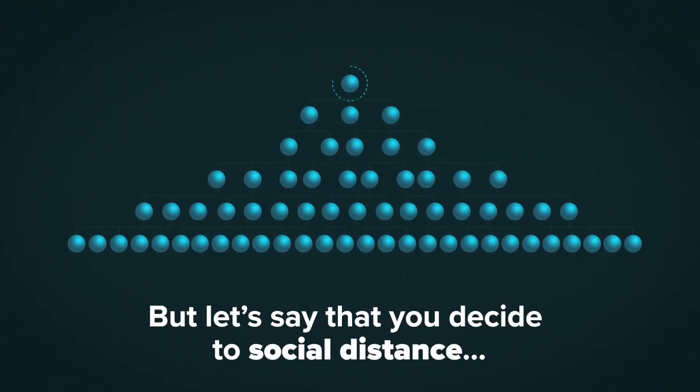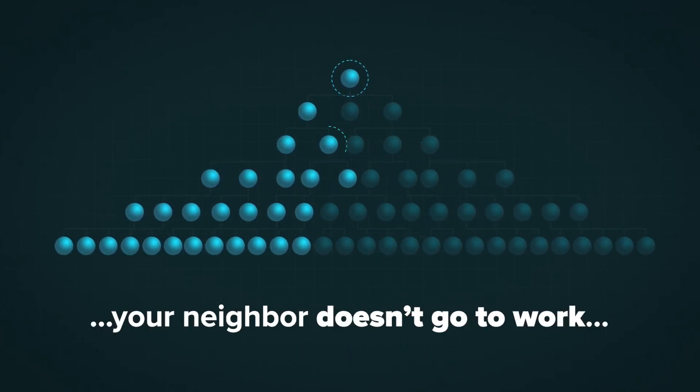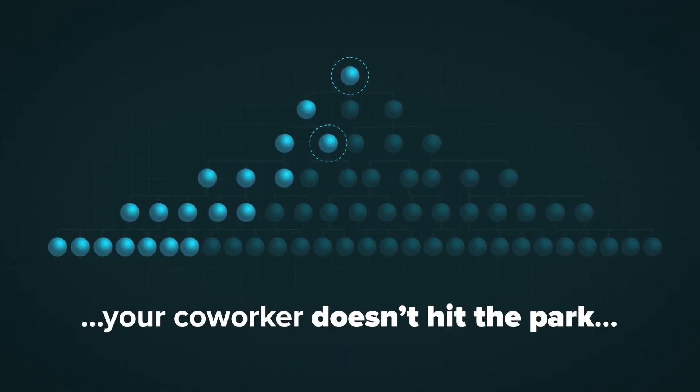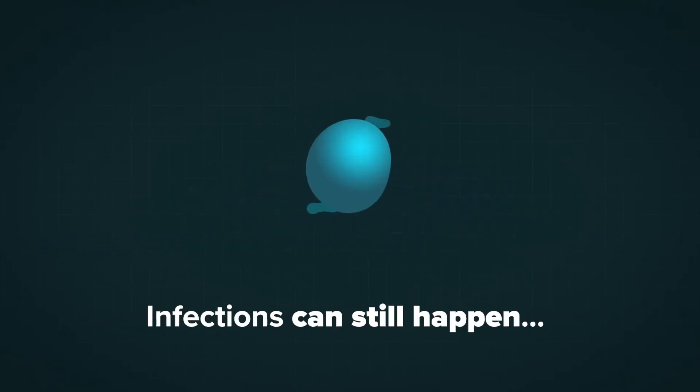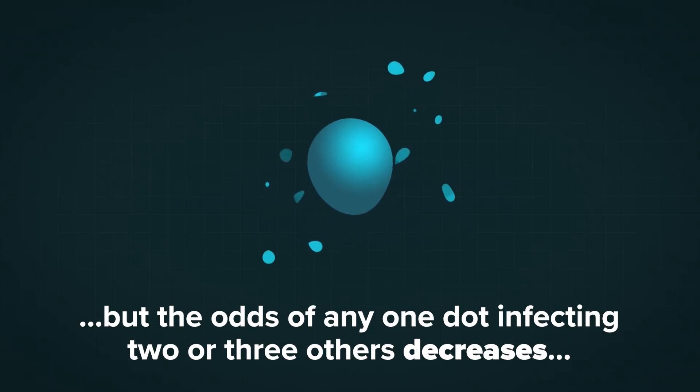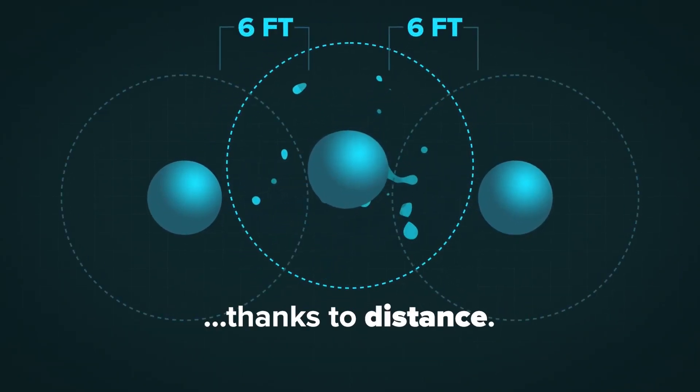But let's say you decide to social distance and only infect one, not 2 or 3. Your neighbor doesn't go to work. Your coworker doesn't hit the park. A stranger stays home. Infections can still happen. But the odds of any one dot infecting 2 or 3 others decreases. Thanks to distance.